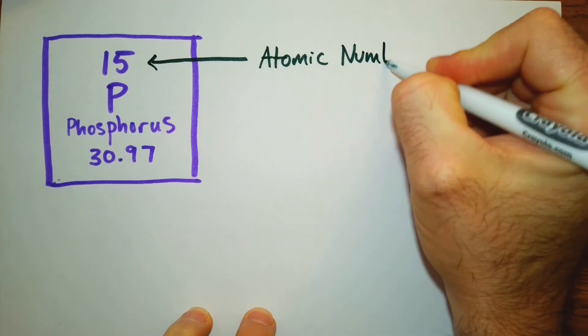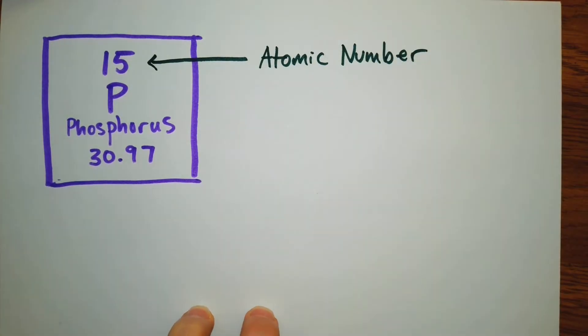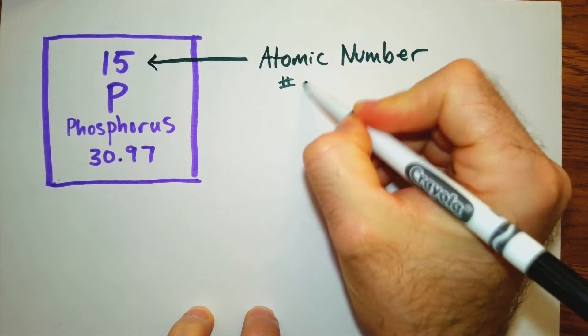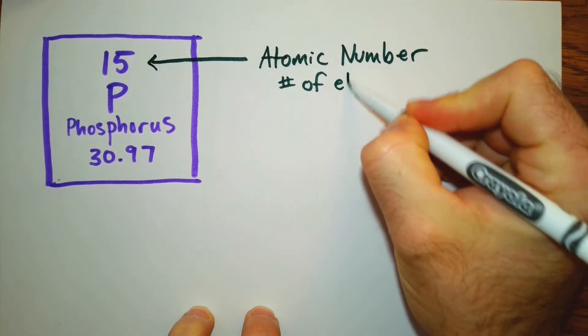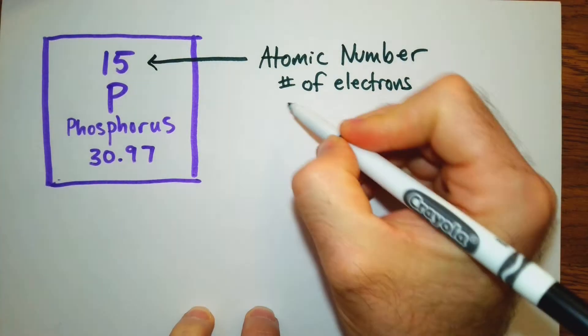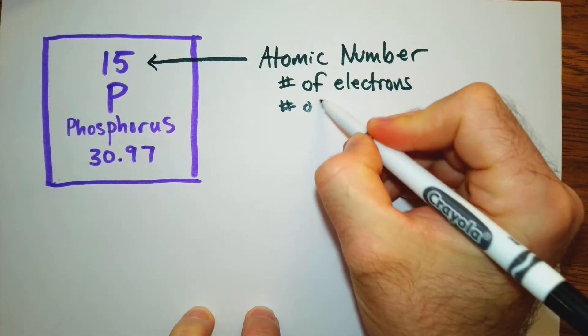The atomic number is going to tell us two things. It will show us the number of electrons. It will also show us the number of protons.